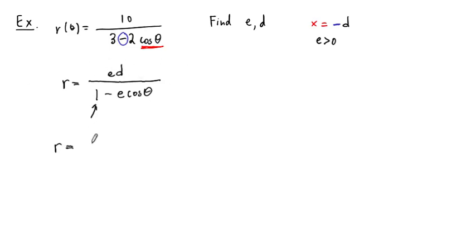We are, instead, we're going to start back with our equation that we were given: 10 over 3 minus 2 cosine of theta. And the first job is to factor out a 3. When we do that, we can just put it on top like this, right? This is 10 thirds. And the numerator becomes 1 minus 2 thirds cosine of theta.